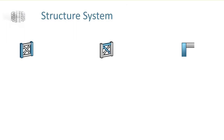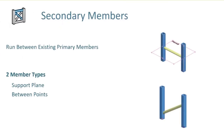The secondary members run between existing primary members — they do not use the existing sketch geometry; they use members that already exist. The two member types are created by selecting planes and joining those primary members together. The 'between points' type creates members between two members based off the endpoints, essentially defining a distance offset from those endpoints.